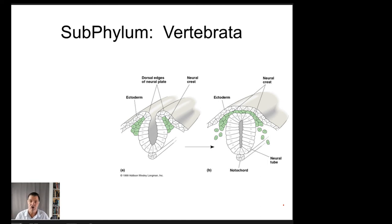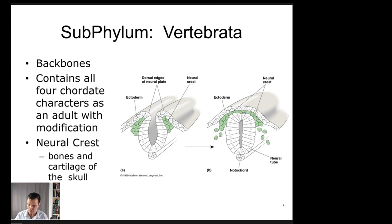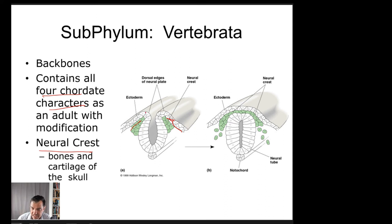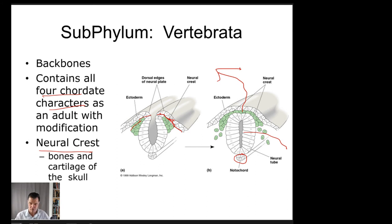Then we get to subphylum Vertebrata, which contains all vertebrate animals. These animals have backbones, similar to our vertebral column, though not exactly like ours yet since our backbones are made of bone and there are intermediates before reaching that. Vertebrates have all four chordate characteristics with modifications. The vertebral column forms via neural crest tissue that pushes up, closes into a loop, and wraps around the notochord and dorsal hollow nerve cord.